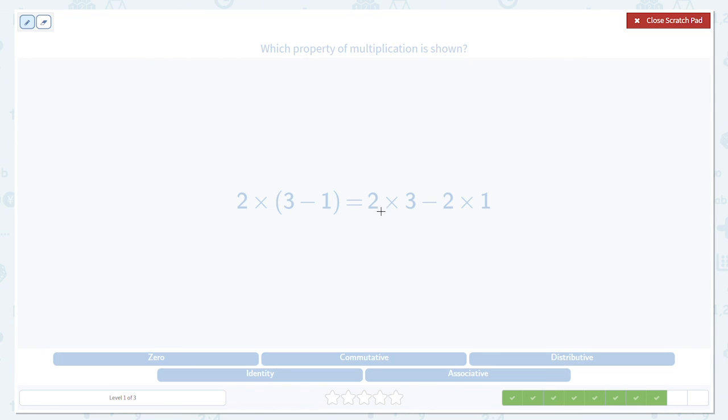Here we go again. The same property that works with addition also works with subtraction. We take the 2 and distribute it. Multiply the 3, 2 times 3. Multiply the 1, 2 times 1.